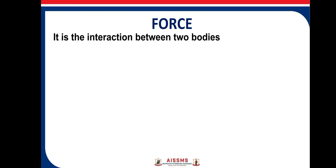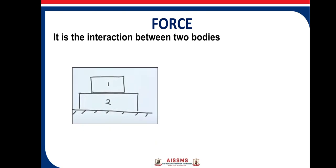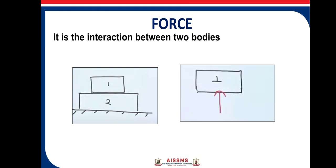Let us understand this with a simple example. Here in the figure, you can see there is a box — one box resting over another box, say box number one and box number two. They are connected to each other and interacting with each other. Now if I ask you to draw the free body diagram of box one only, we have to isolate box one from box two. These two boxes are interacting with each other. Box number one is applying a downward force on number two, whereas number two is applying an upward force on number one, as shown in the figure.